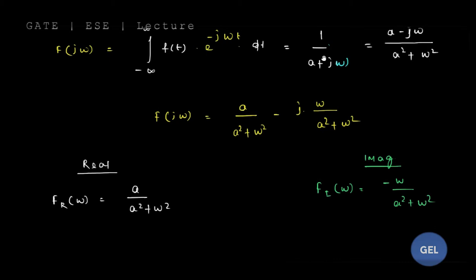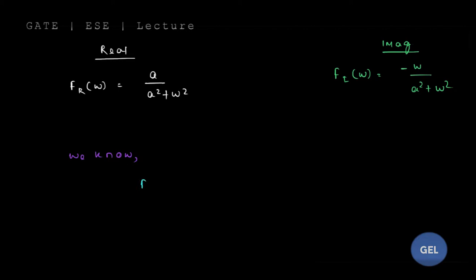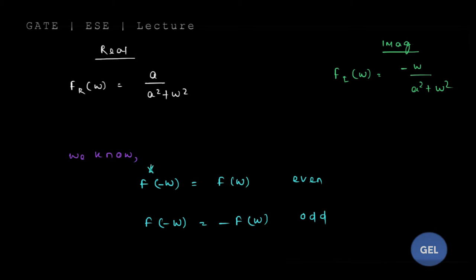We know that if you substitute f(−ω) and the answer gives f(ω), it is called an even function. If it gives −f(ω), it is called an odd function. We have also studied even conjugate and odd conjugate functions: if F*(−ω) = F(ω) it is even conjugate, and if F*(−ω) = −F(ω) it is odd conjugate.